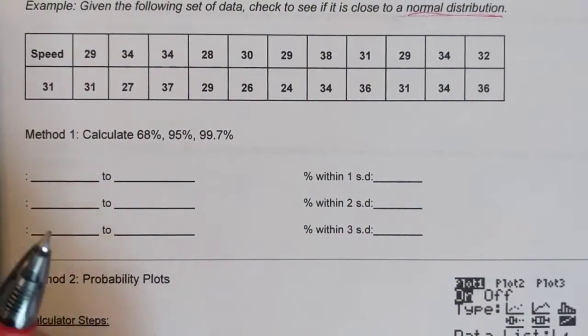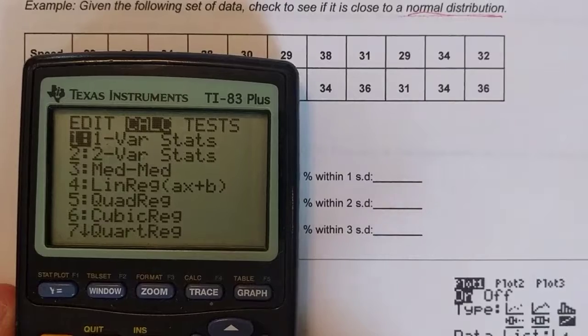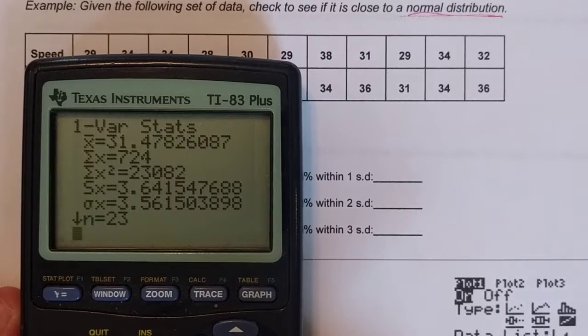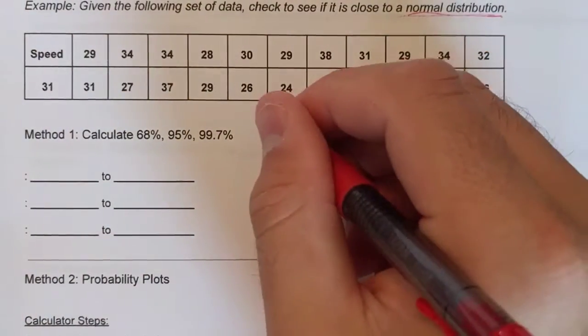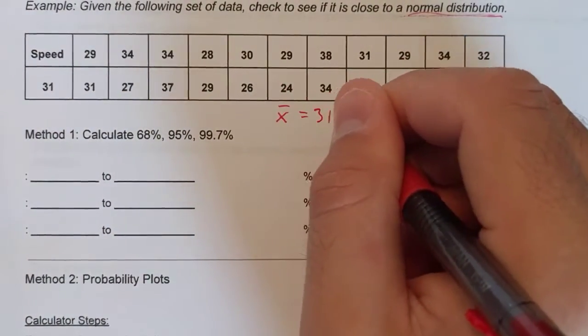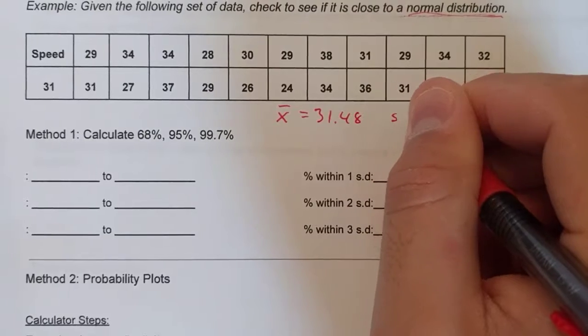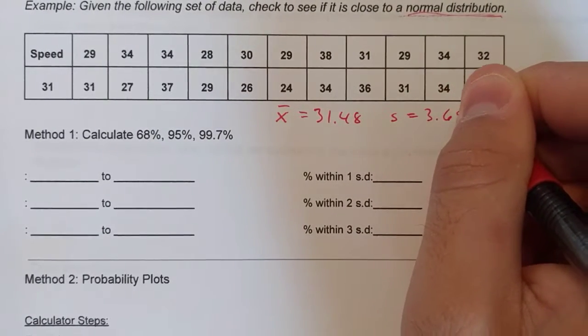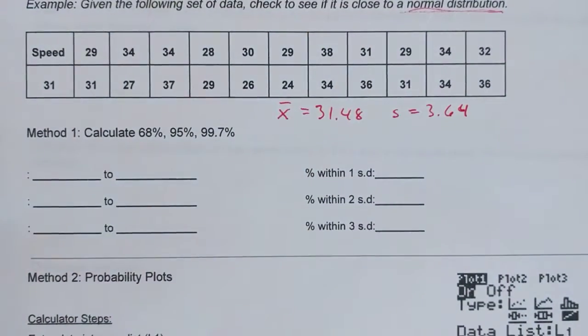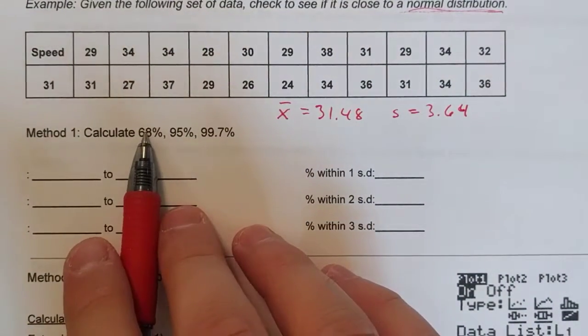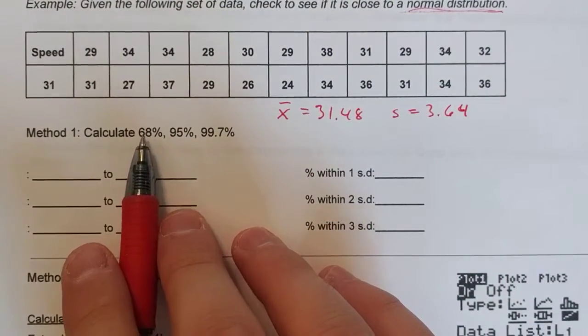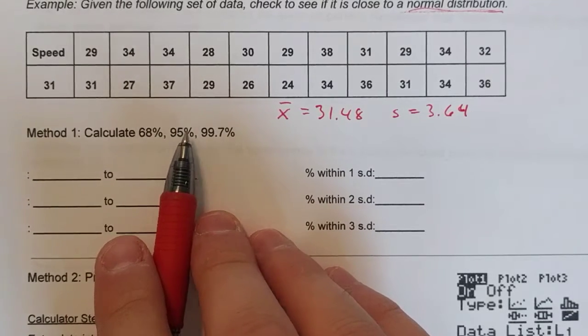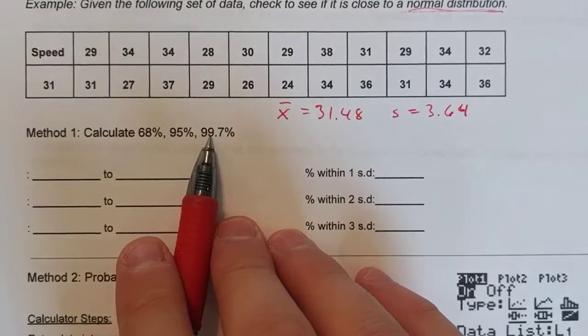Go to STAT, CALC, the one variable STAT, that's the first option. I got a mean of 31.48, standard deviation of 3.64. So the rule for normal distribution is that within one standard deviation there's 68 percent of the data, two standard deviations there's 95 percent of the data, and three standard deviations is 99.7 percent of the data.